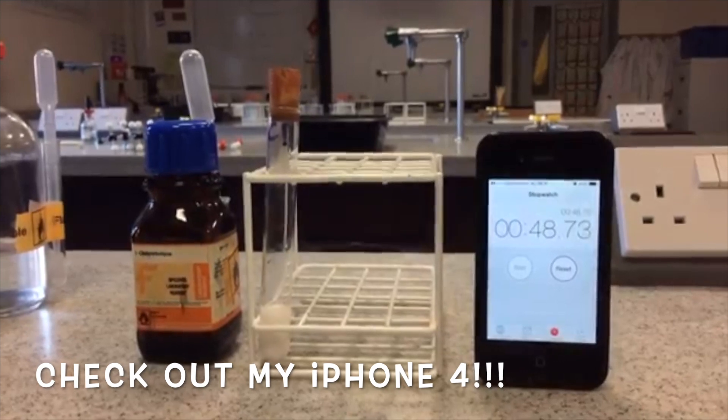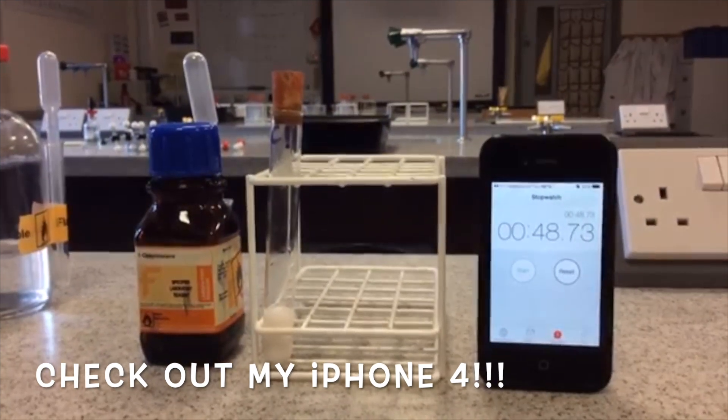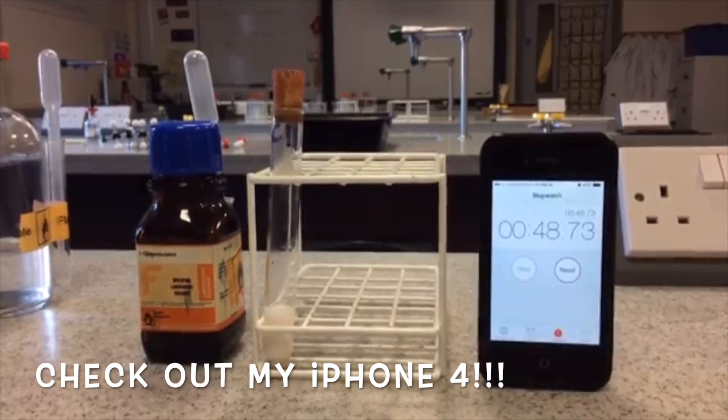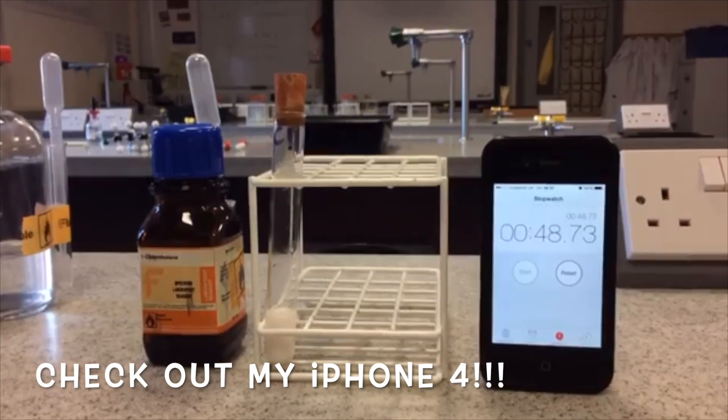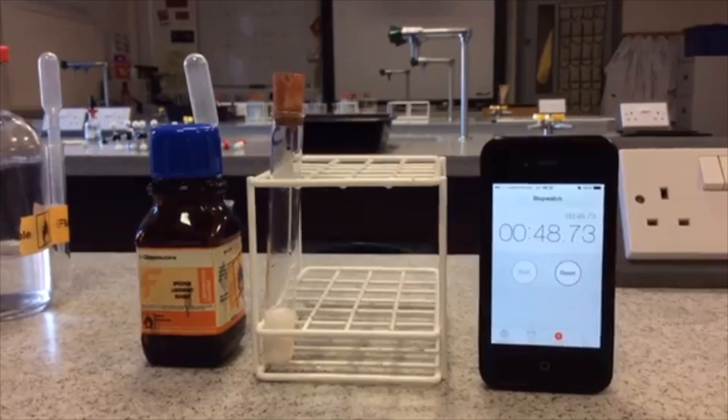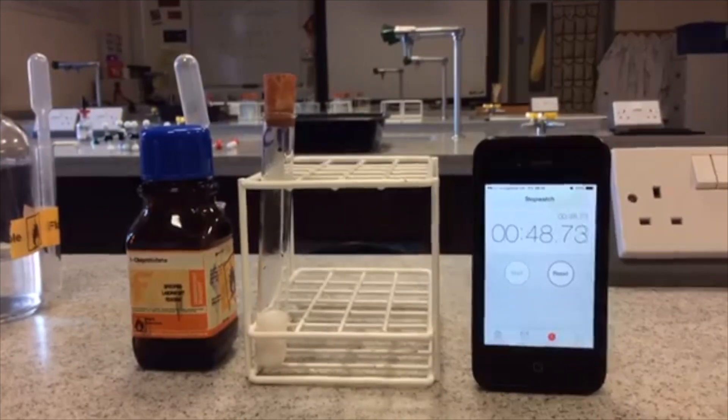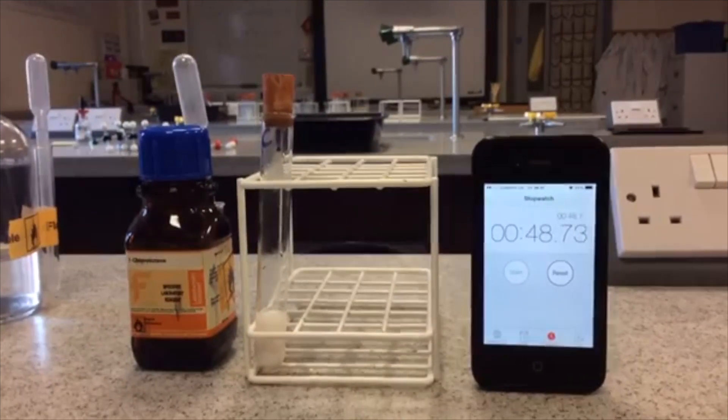There we have the white precipitate of silver chloride, formed from the hydrolysis of 1-chlorobutane in the presence of the silver nitrate solution. You can see from the stopwatch there that's taken 48.73 seconds.